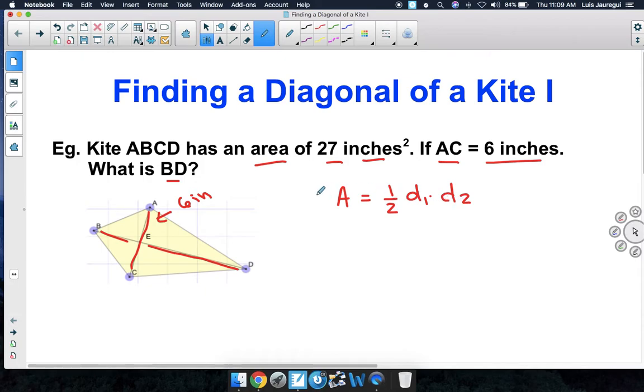Substituting in what we know, we can get the following equation. Instead of area, we can replace that A with 27 square inches. That is equal to 1 half times the length of one of the diagonals, which in this case is going to be 6 inches, and we're going to call the other diagonal X.